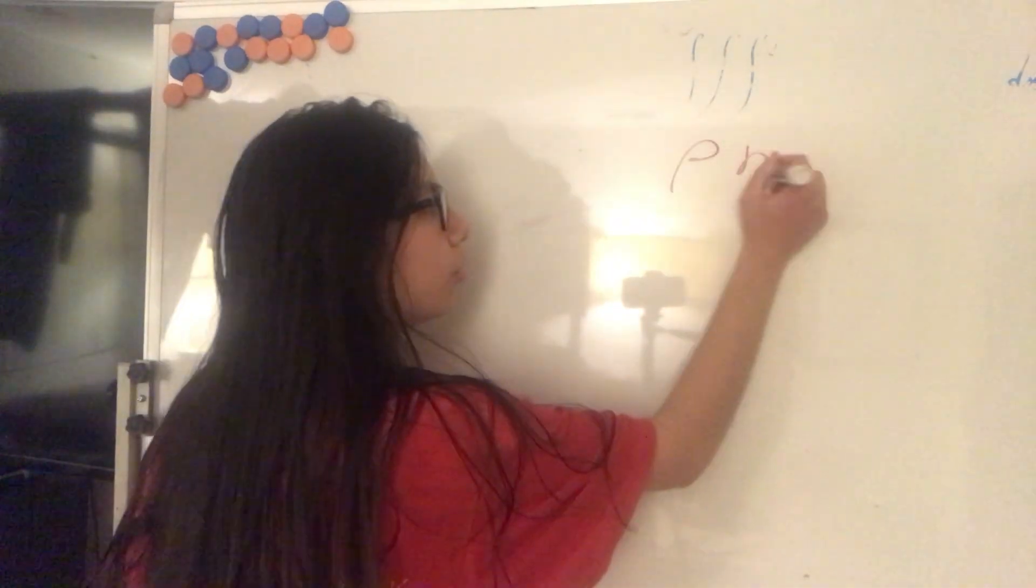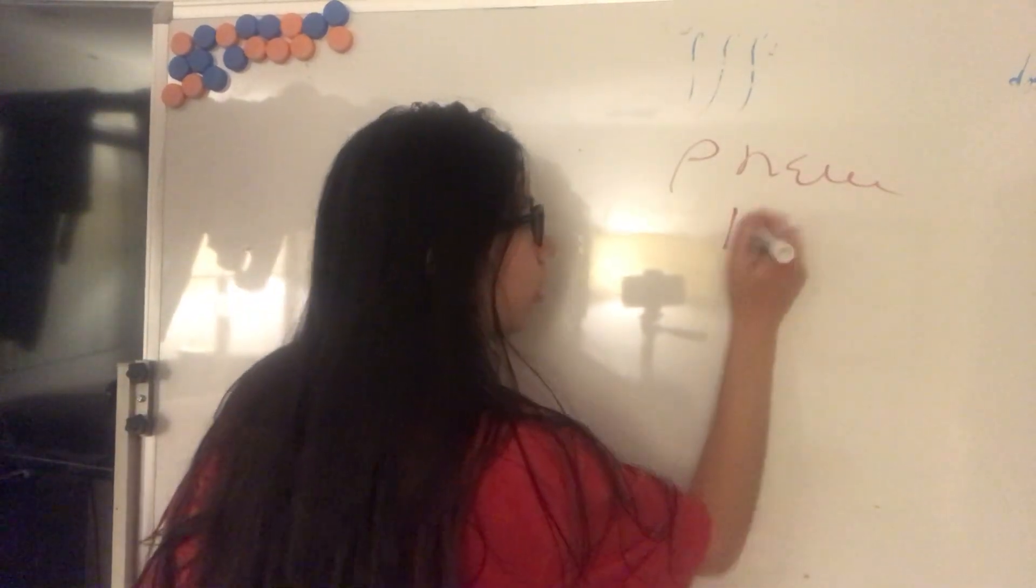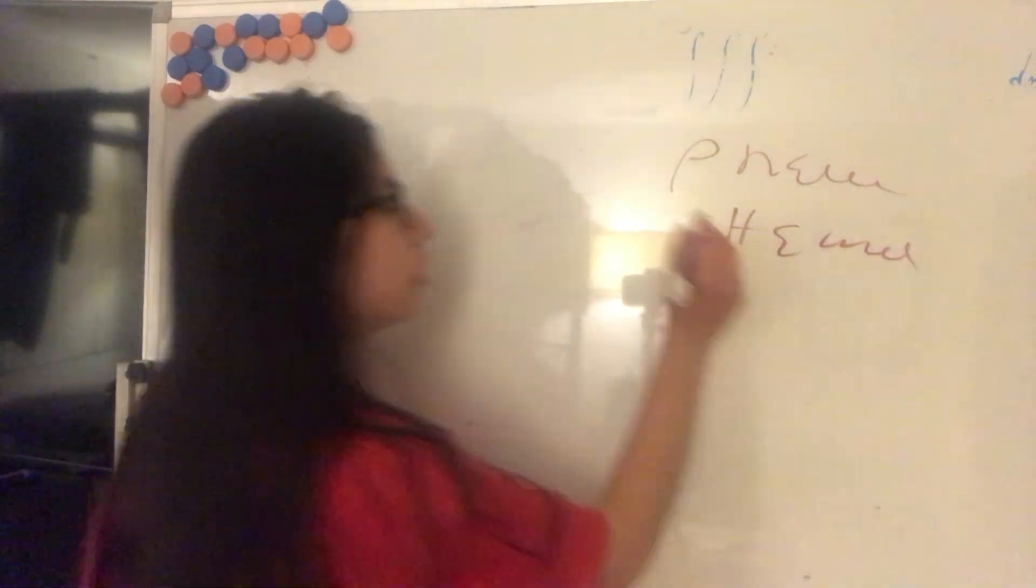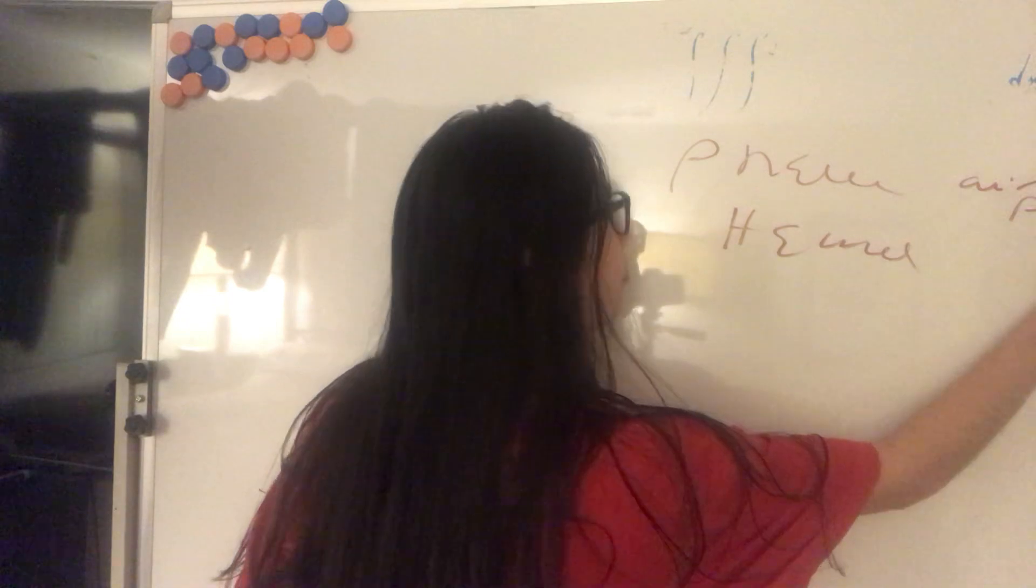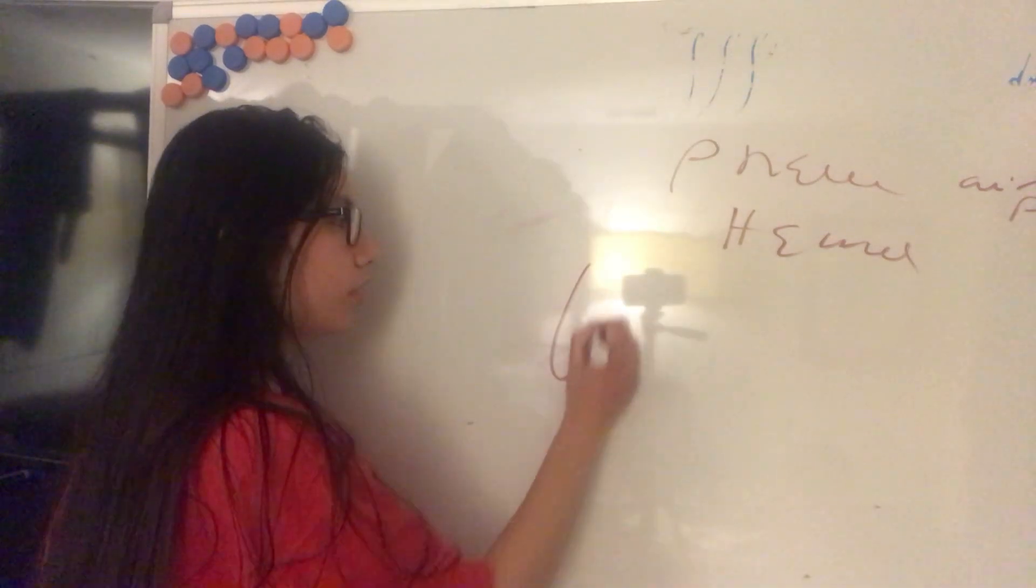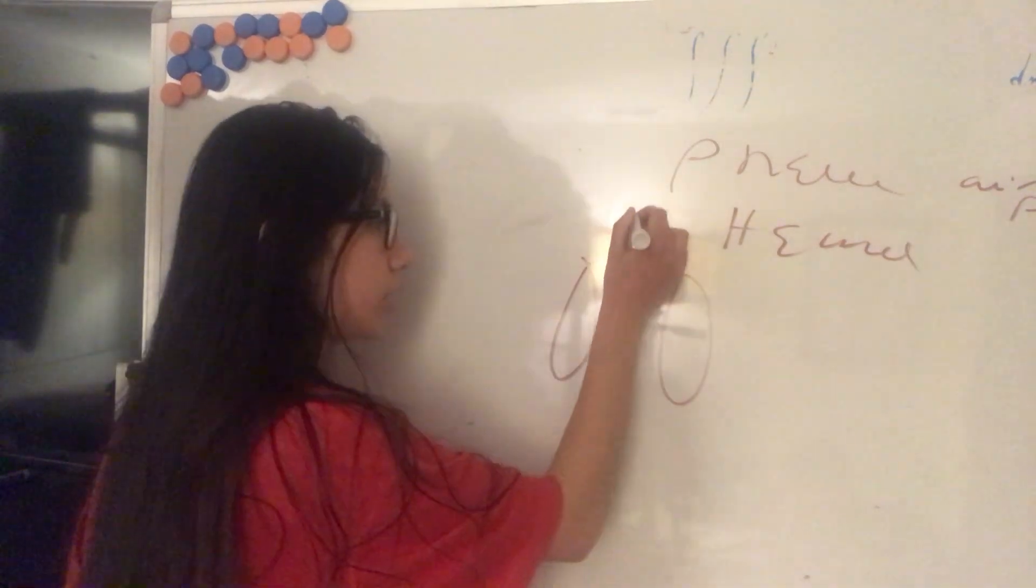Now we are going to see the pneumothorax and the hemothorax. The pneumothorax would be here on the pleural space. So here we have the lungs, here is the trachea.